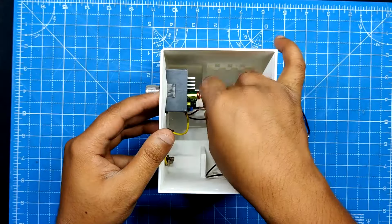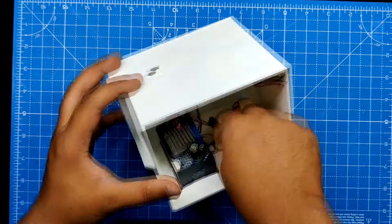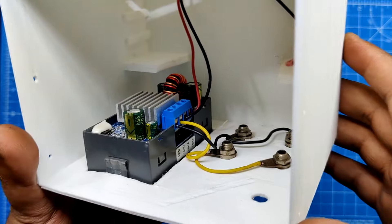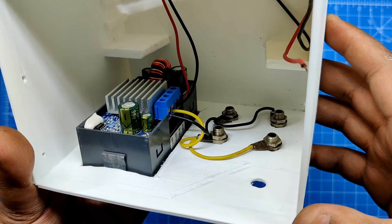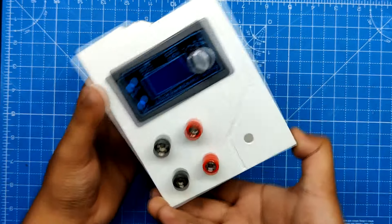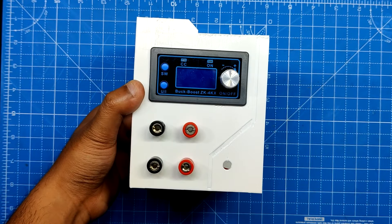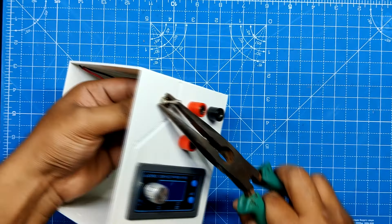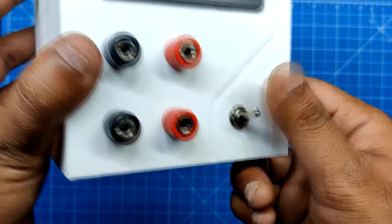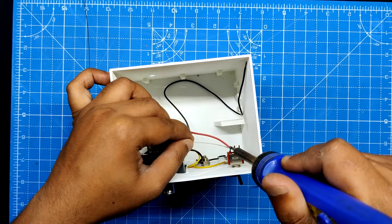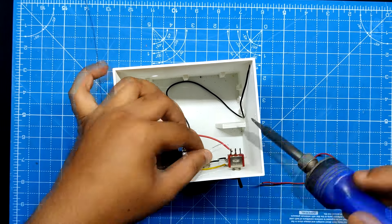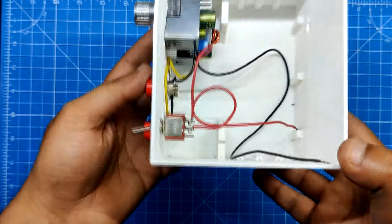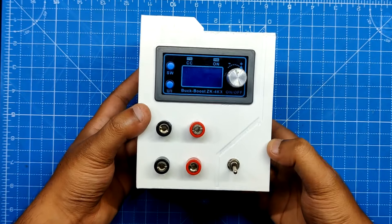We created a total of two washer wire assemblies, each of which is positioned behind the banana pin that have been inserted to the output body section. The banana pins will be connected to the ZK4KX module's positive and negative output terminals via these two washer wire assemblies. The toggle switch was then inserted and tightened into the body's designated holes. Next, we connected the toggle switch to the ZK4KX module. This switch is designed to break the positive line that connects the module's input to the power supply.